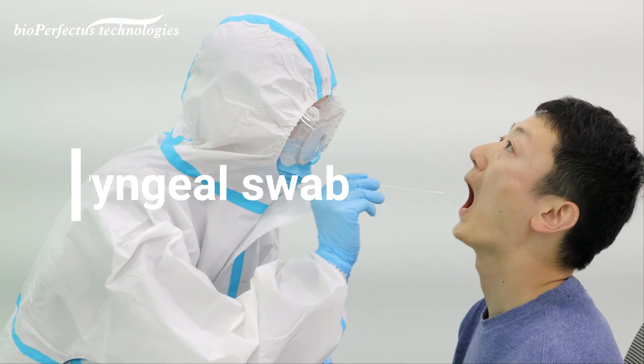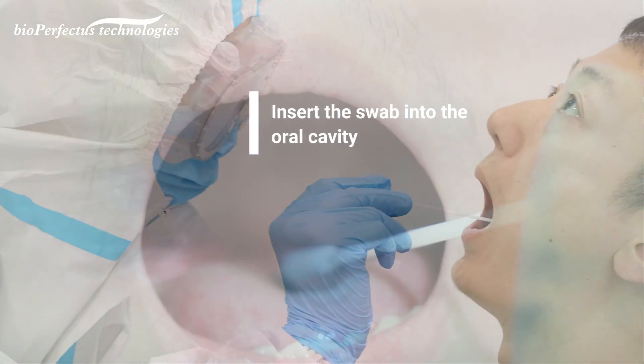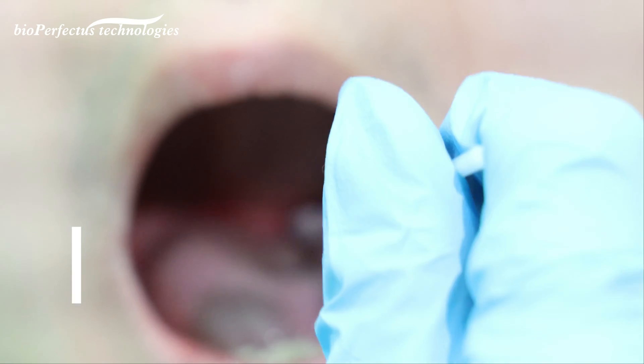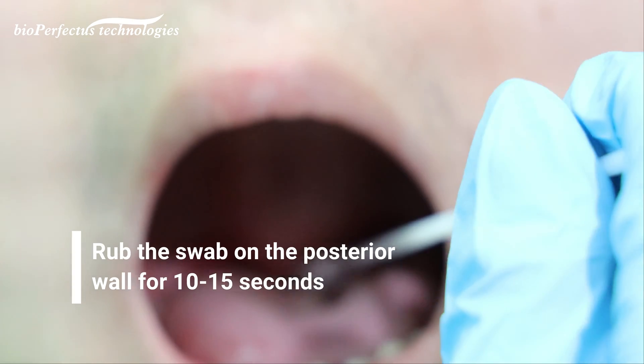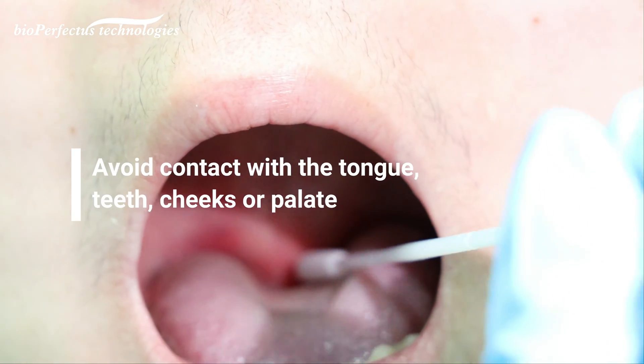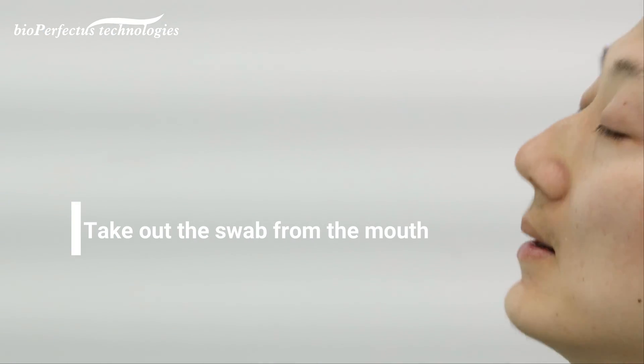Pharyngeal swab: Insert the swab into the oral cavity. Rub the swab on the posterior wall for 10 to 15 seconds. Avoid contact with the tongue, teeth, cheeks, or palate. Take out the swab from the mouth.